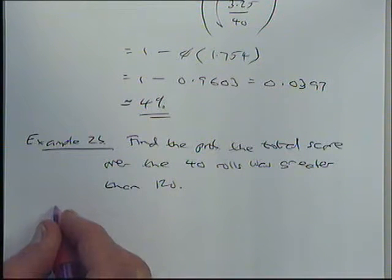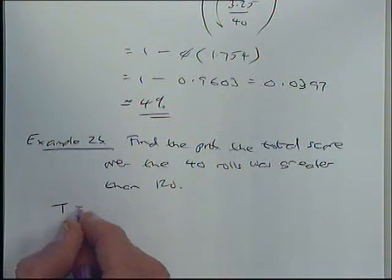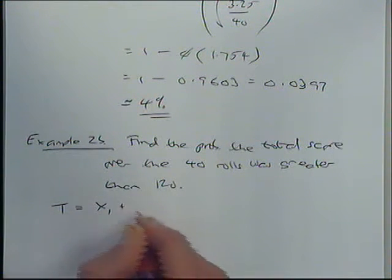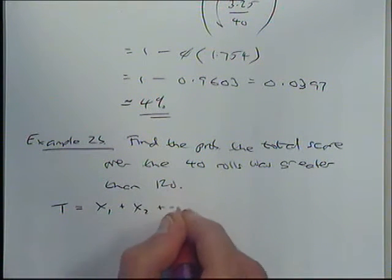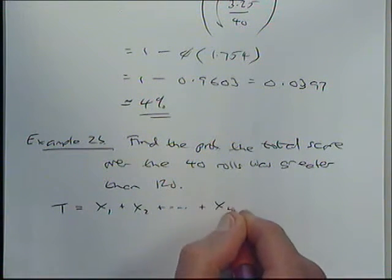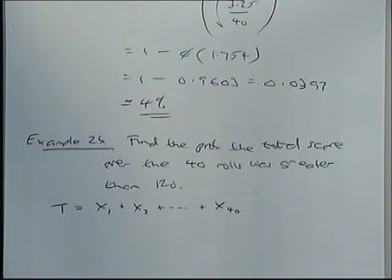So I've got a new variable here, I'm going to call it T, which is adding up the score on the first throw and the second throw, all the way up to adding up the score on the 40th throw.